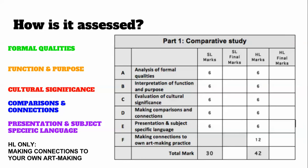There are five criteria for SL and six for HL, each worth six points for the first five: formal qualities, function and purpose, cultural significance, comparisons and connections, presentation, and subject-specific language. If you are in HL, those three to five extra screens are worth up to 12 points and cover connections to your own art.